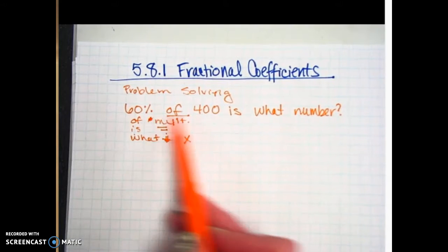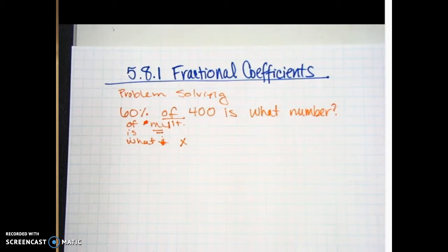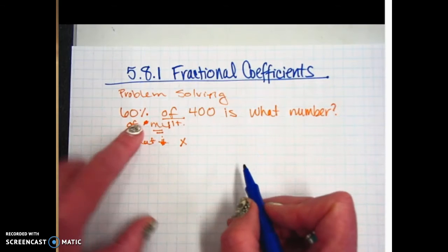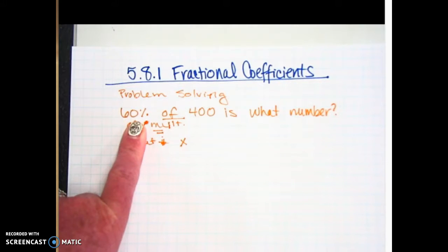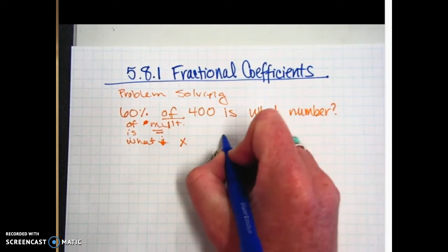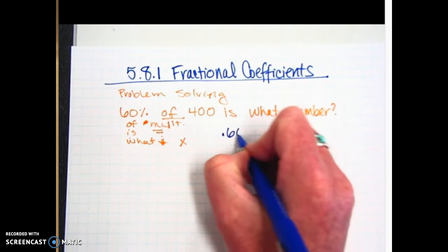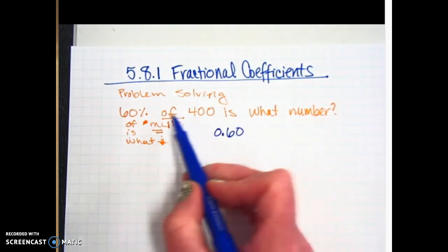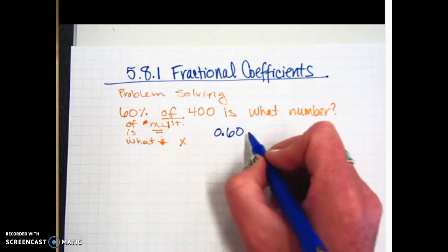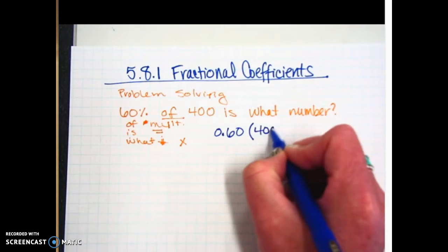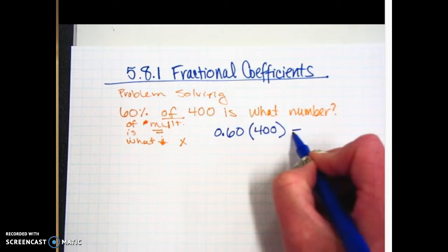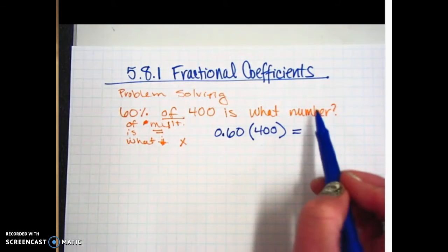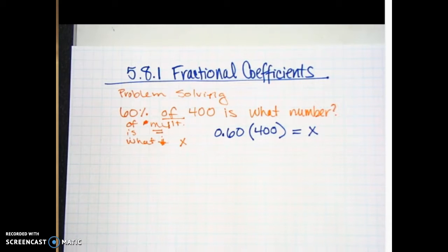So if we were going to take this question and change it to a math sentence, you would take 60%. And you should, at this point in your math career, be able to just write that as a decimal right off the bat. As a decimal, what is that? 0.60 or 0.6. And then 60% of 400. That means I'm going to multiply. And then 'is', so put my equal sign. 'What number?' That's where my X is going to go.